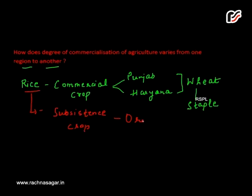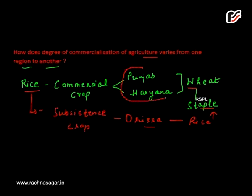However, rice is a subsistence crop in the state of Orissa, because rice itself is the staple food of the people of Orissa. So in Punjab and Haryana wheat is the staple food crop, whereas in Orissa rice is the staple food crop. This shows how the degree of commercialization of agriculture varies from one region to another.